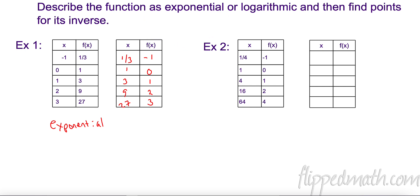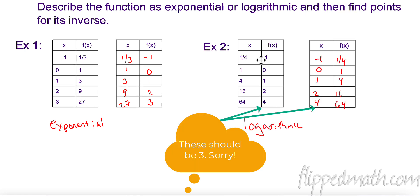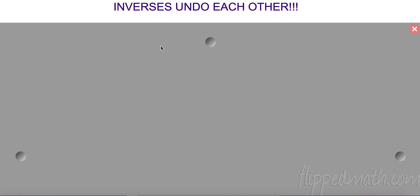For number two: it's logarithmic. Even though the x-values skip — negative one, zero, one, two, four — the pattern is still additive, and the x-values are going up multiplicatively. When x-values go up multiplicatively, you have a logarithmic function. I took my range and made it the domain of the exponential inverse, and my domain became the range — the inverse of a logarithmic function is exponential.